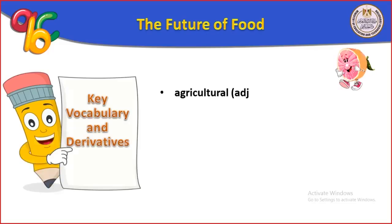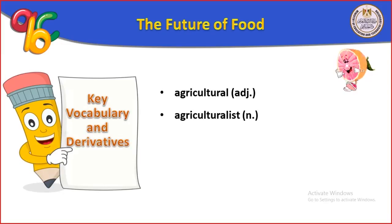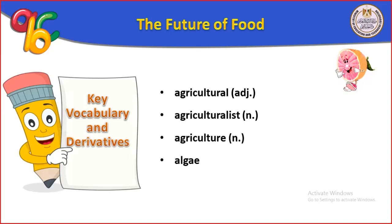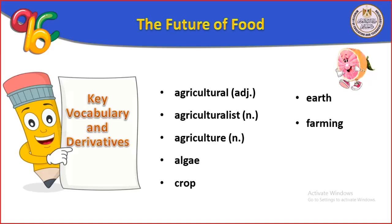The future of food talks about agriculture and hydroponics, and what is the difference between agricultural and agriculturalist. Agriculturalist is the human that works in agriculture. Algae is a type of food. Crop is the crop, and we have earth, the earth, and the farming is the farmland and hydroponics.